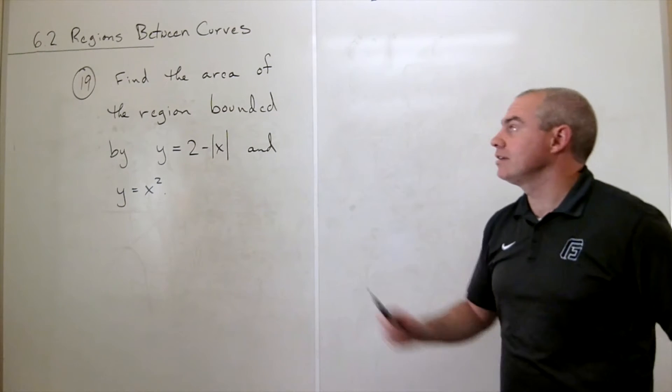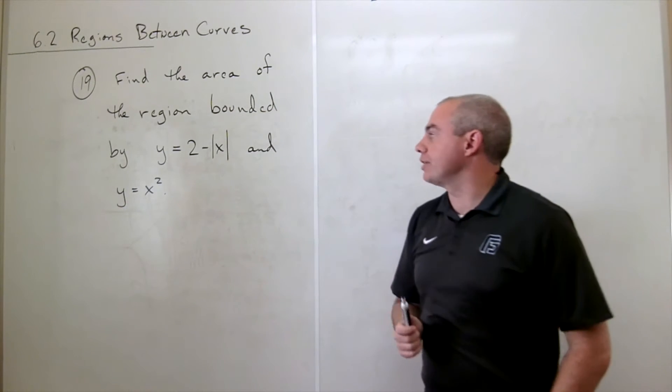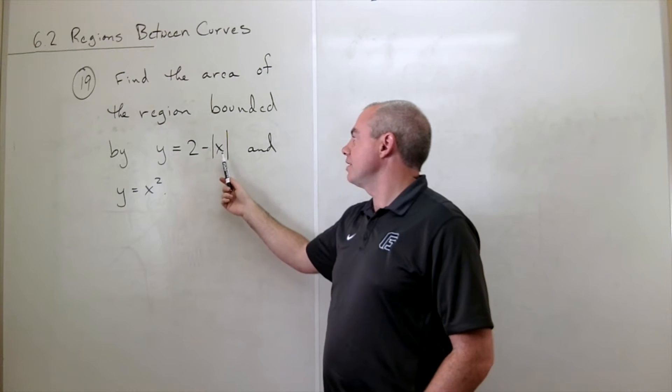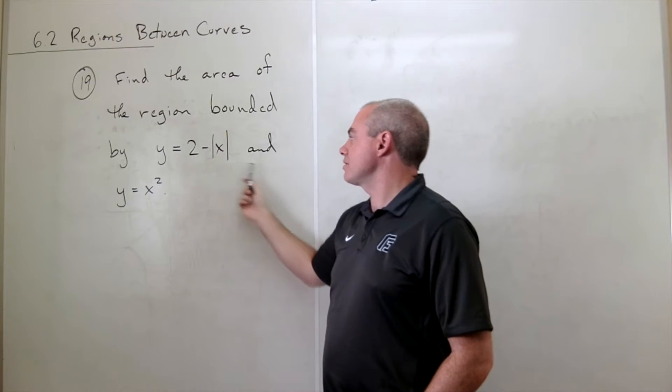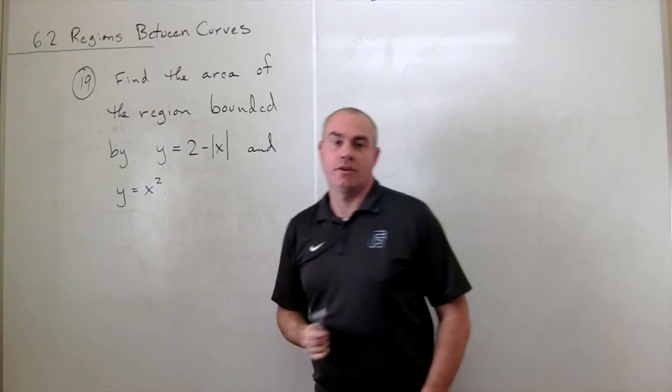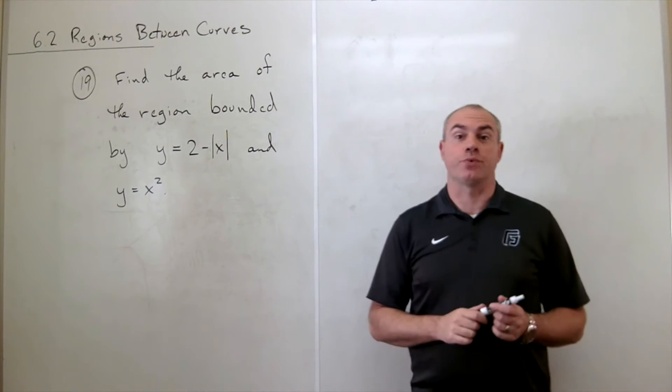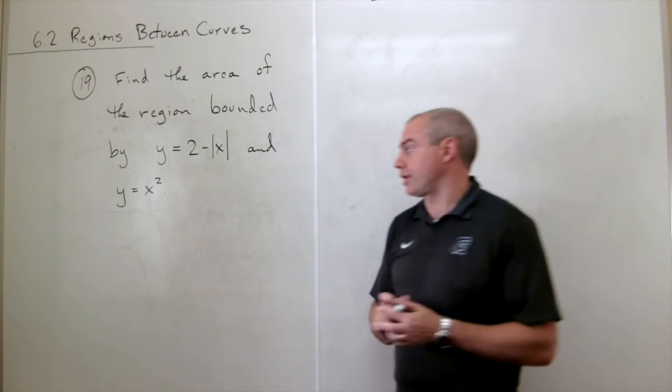In problem number 19 we'd like to find the area of the region bounded by y equals 2 minus the absolute value of x and y equals x squared. So the first thing we should do is draw the region.